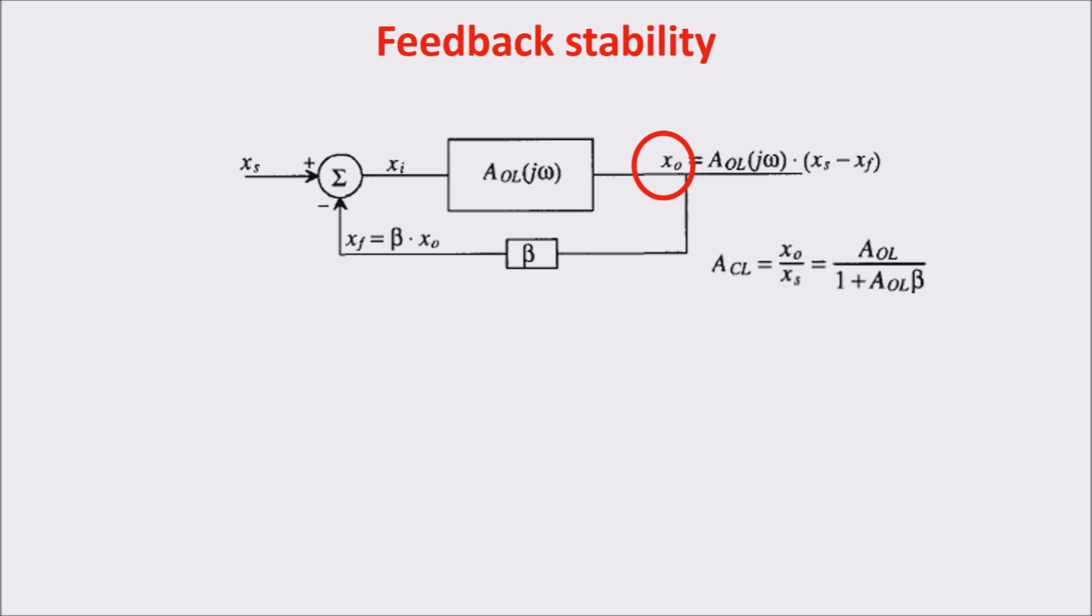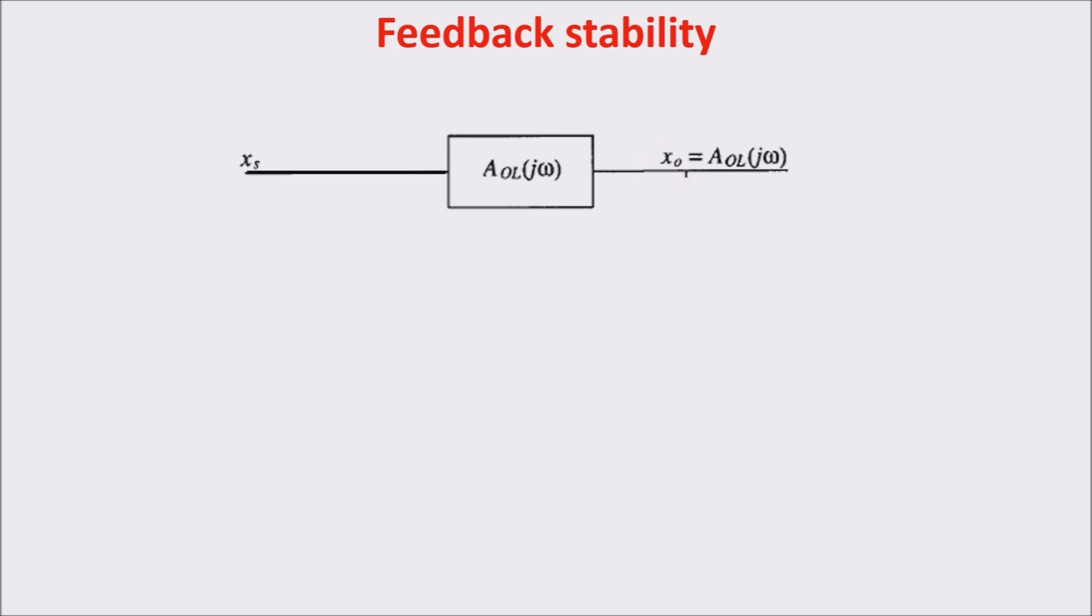However, looking to this formula, we see that if AOL times beta is equal to minus 1, the closed loop gain tends to infinity, or in other words, our system becomes unstable. In order to understand why the feedback can introduce instability, we have to talk about the phase of the signal and take into account the frequency behavior.